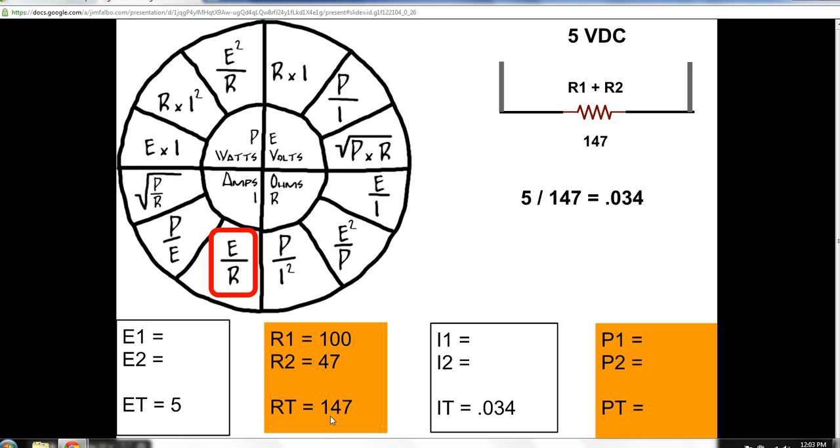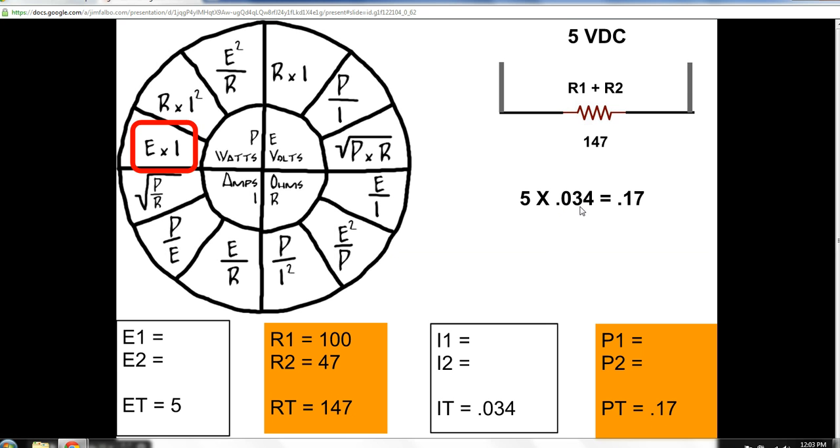Well, 5 volts divided by 147 ohms is .034 amps. Now, if I want to solve for wattage, I have voltage and current. So, I might as well go ahead and solve total wattage. 5 times this current, .034, total voltage times total current equals total wattage.